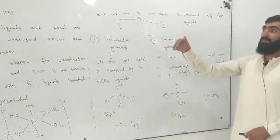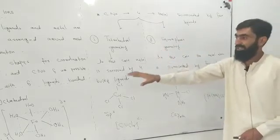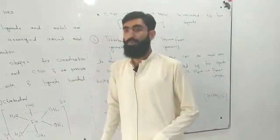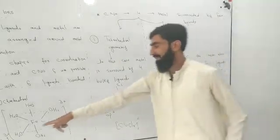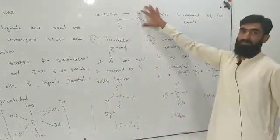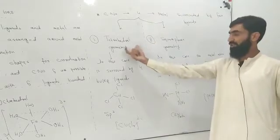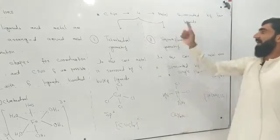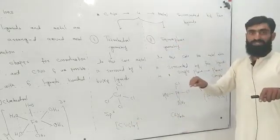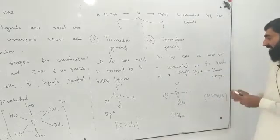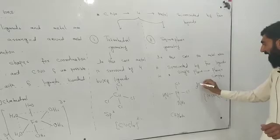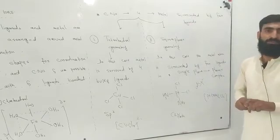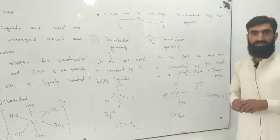To summarize: when coordination number is 6, the geometry is octahedral and hybridization is d2sp3 or sp3d2. When coordination number is 4, there are two possibilities: tetrahedral geometry, which is a three-dimensional structure with sp3 hybridization; or square planar geometry, which is in one plane with dsp2 hybridization.